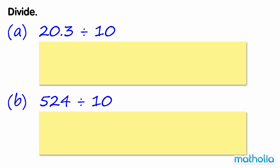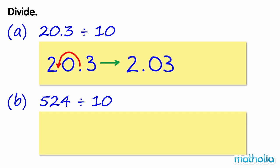Divide. A. 20.3 divide 10. We can divide by 10 by shifting the decimal point one place to the left. 20.3 becomes 2.03. So 20.3 divide 10 equals 2.03.